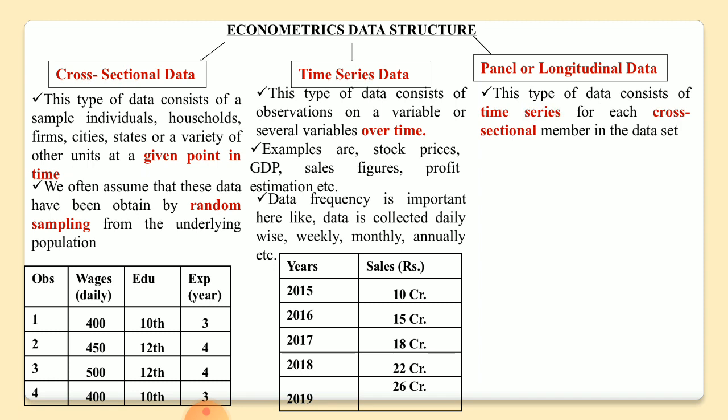Now, panel or longitudinal data is the combination of both time series data and cross-sectional data. This type of data consists of time series for each cross-sectional member in the data set, meaning we have more than one observation and we collect data over a period of time. For example, collecting sales data of five companies for the last ten years, or collecting profit data of three companies for the last five years — this is known as panel data.